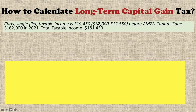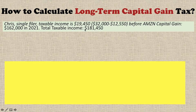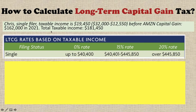Let's put the information together. Chris's taxable income from his job is $19,750 — that's his salary minus the standard deduction — and this is before the Amazon capital gain. If you add the long-term capital gain to the taxable income from his job, you get the total taxable income amount.